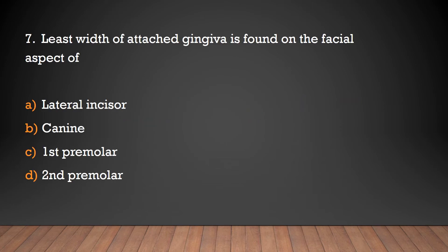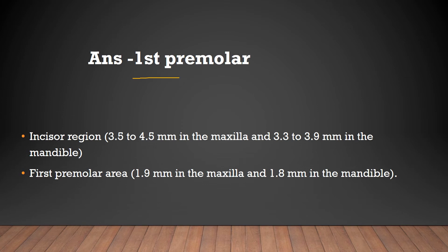Least width of attached gingiva is found on the facial aspect of: lateral incisor, canine, first premolar, or second premolar? The answer is first premolar. Greatest width of attached gingiva is present in the incisor region: 3.5 to 4.5 mm in the maxilla, 3.3 to 3.9 mm in the mandible. Least width is in the first premolar area: 1.9 mm in the maxilla, 1.8 mm in the mandible.